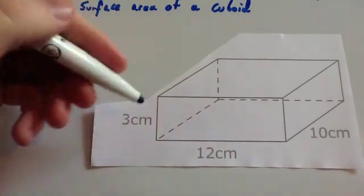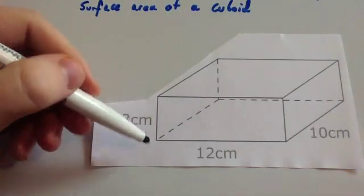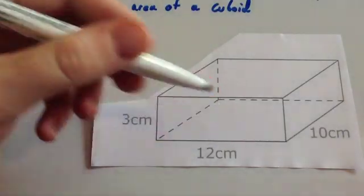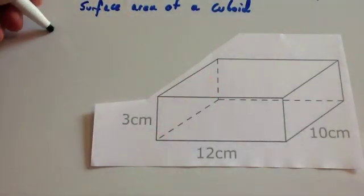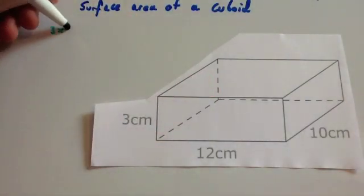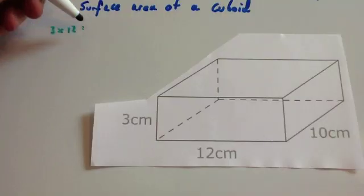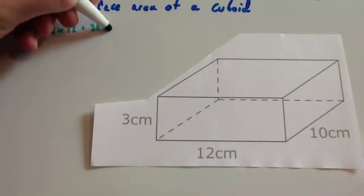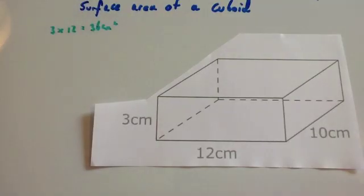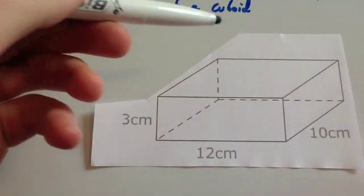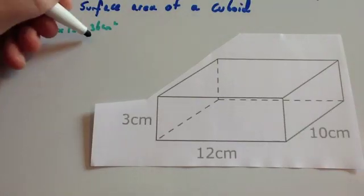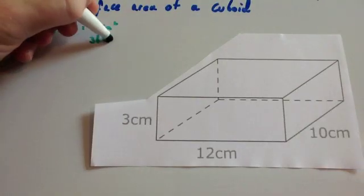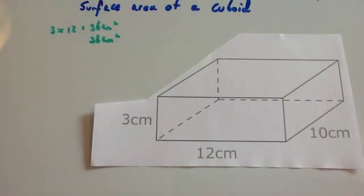For the front, you've got three by twelve, so you do three times twelve which is equal to 36 centimetres squared. The back is going to be the same, so it's going to be another 36 centimetres squared.